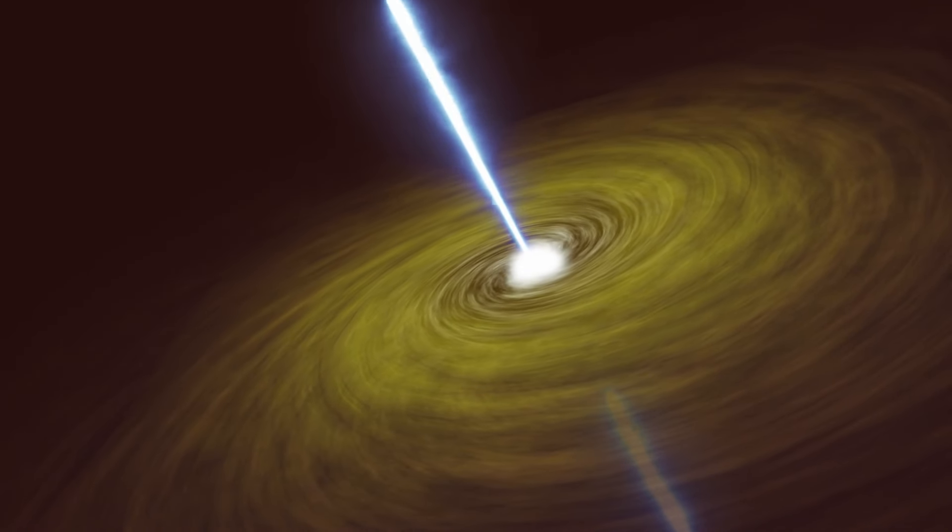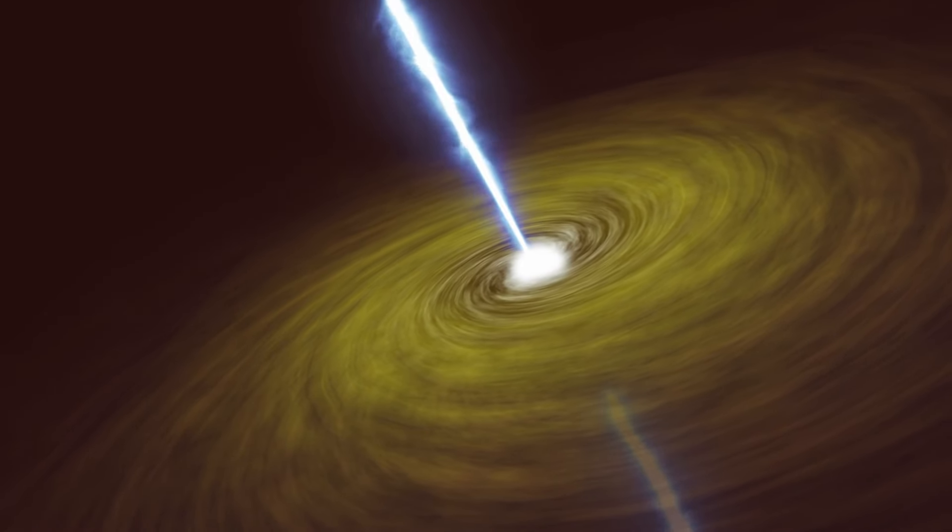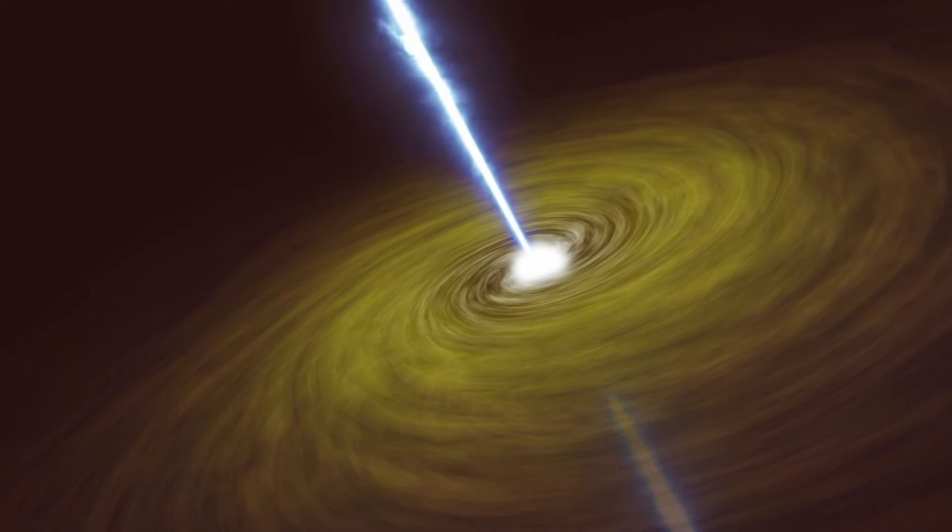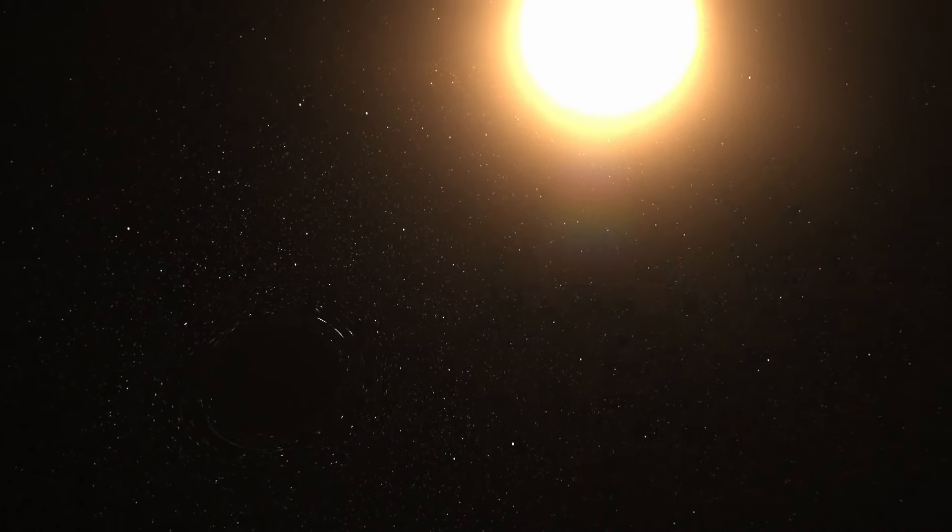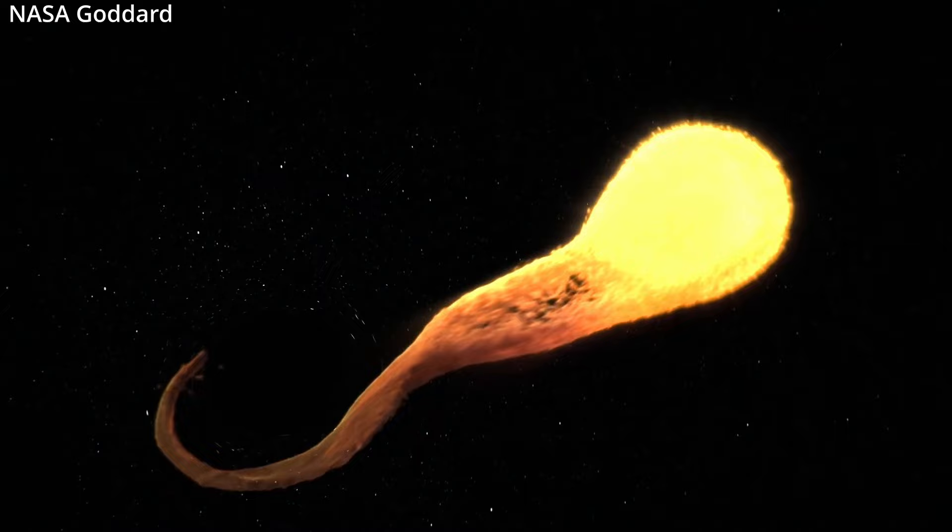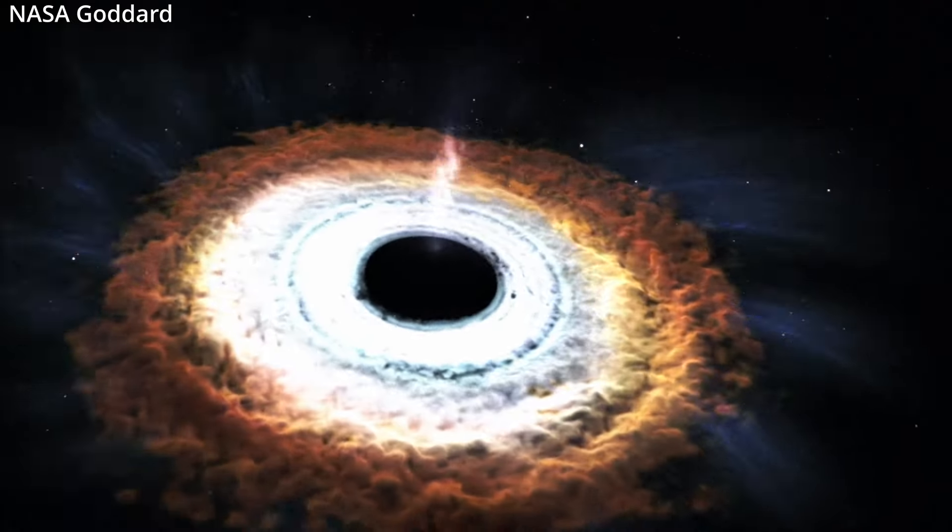Black holes are often found in the centers of quasars, which are some of the brightest objects in the universe. There are systems called X-ray binaries where the black hole is accreting matter from a companion star, emitting X-rays in the process. Talk about a one-sided toxic relationship.